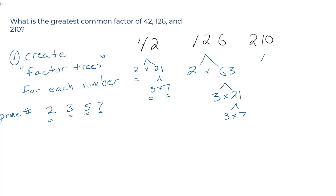How about 210? Quickest way to do this one is probably 10 times 21. 10 is 2 times 5. 21 is 3 times 7. So that's the first step. Create the factor tree.